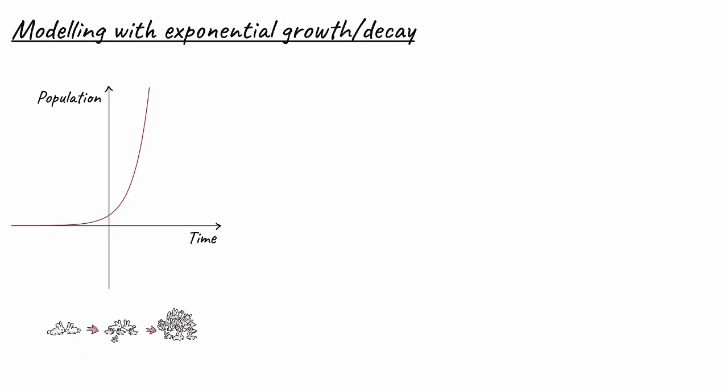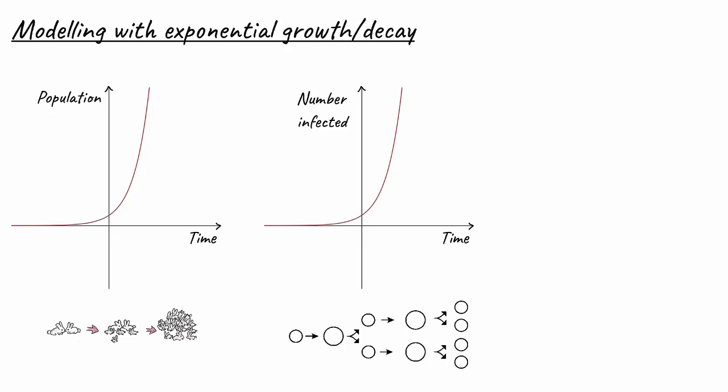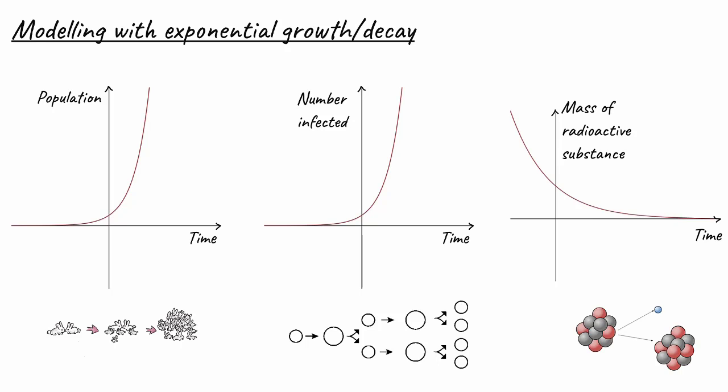In this video we're going to consider modeling with exponential growth or decay. In our universe there are many different processes which can be described exponentially. For example, we might be asked to describe the change in a population over time, and if that population is growing in an unimpeded manner we might have an exponential graph. Similarly, we might describe the number of individuals within a population infected by some kind of disease, or a decay process such as radioactive decay, where a substance is losing mass at a proportion to the current mass, giving us exponential decay.